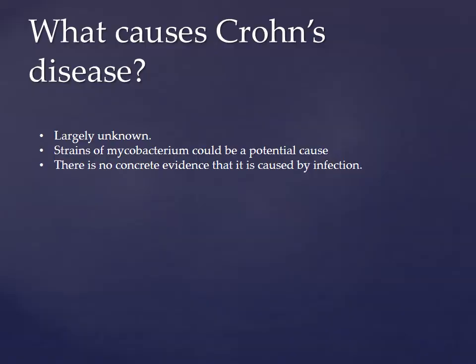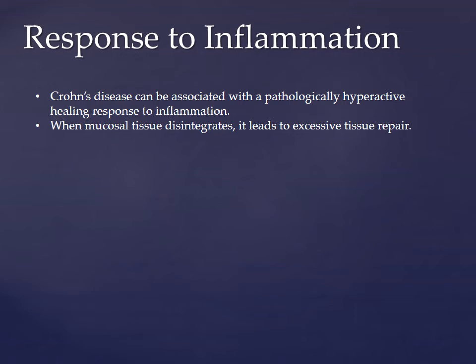The causes of Crohn's disease are largely unknown, but strains of mycobacterium could be a potential cause. Mycobacterium is a genus of actinobacteria known to cause serious diseases in mammals, including tuberculosis. However, there's no concrete evidence it is caused by infection — it is a multifactorial disease involving a combination of environmental and genetic causes. It can be categorized as a response to inflammation, specifically a pathologically hyperactive healing response. When mucosal tissue disintegrates, excessive tissue repair is kicked into place.